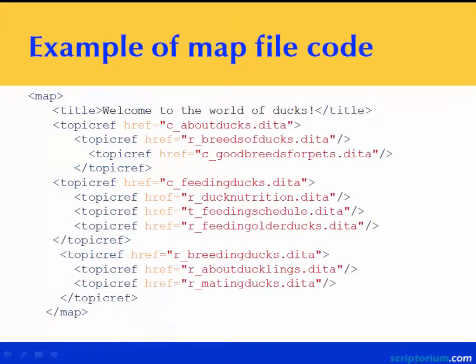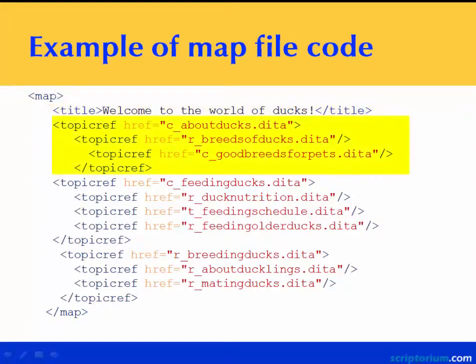Now that map file in DITA looks like this. We have an open map tag, we have a title — 'Welcome to the World of Ducks' — that's the title for this map file. And then you can see we've got topic refs and hrefs.